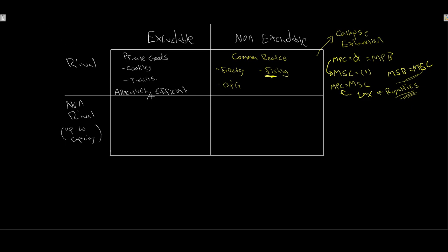In the bottom-left of the grid — goods that are excludable but non-rival — we call these club goods. Examples include museums, pools, roads, highways, bridges, and tunnels. The big problem with club goods relates to this 'up to capacity' situation.